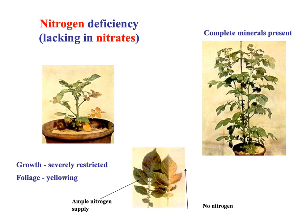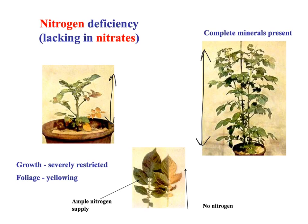Nitrogen deficiency: we're lacking in nitrate, specifically a form that the plant is able to take up or assimilate. On the right we've got what a plant would look like if all the minerals were present. On the left we've got a plant lacking in nitrates - growth-wise it's severely restricted. If you just look at the height you can see it's much smaller. We've got poor, stunted growth, and more importantly we've got yellowing of the leaves, as you saw in the first image.